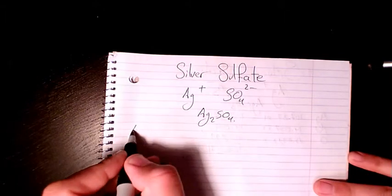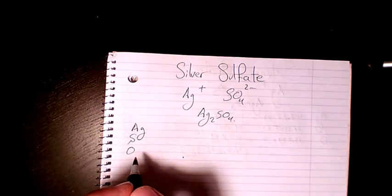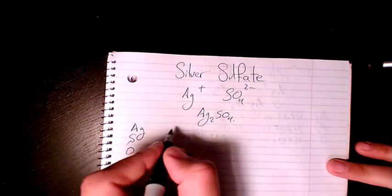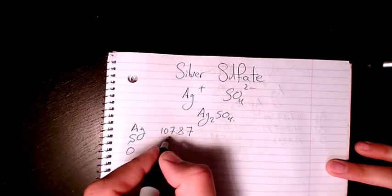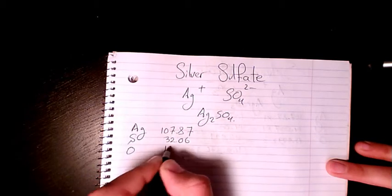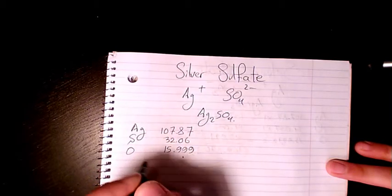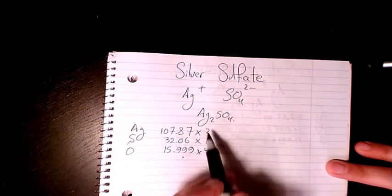Ag is 107.87, sulfur is 32.06, and oxygen is 15.999. So we have two, one, and four atoms for each of them.